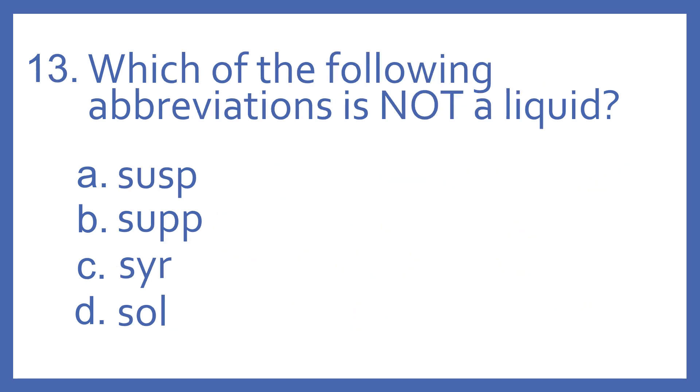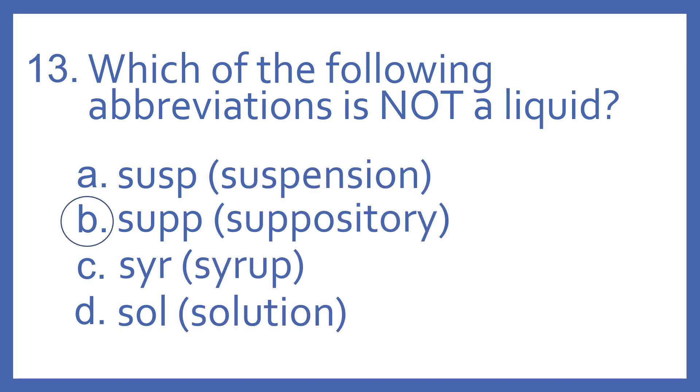Number 13, which of the following abbreviations is not a liquid? A, SUSP. B, SUPP. C, SYR. Or D, SOL. And the answer is B, SUPP. That's an abbreviation for a suppository. The other ones are liquids. SUSP stands for suspension. SYR stands for syrup. And SOL stands for solution.